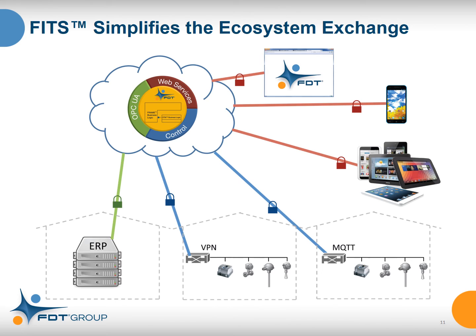Here you have a view of the connected enterprise using all of these components for a broader scope. On the upper right, a web browser is accessing the FITS application to view DTMs and other activities. Just below that is a phone running a custom app developed for Android or iOS and downloadable from their web stores. A variety of tablets, phones, and anything supporting a browser or app can be used in these applications. We also have secure connections shown to a couple of facilities — one using MQTT, one using VPN — and connectivity to the corporate ERP application through the cloud using OPC UA. This is just one example of the very broad architectural possibilities of FITS.